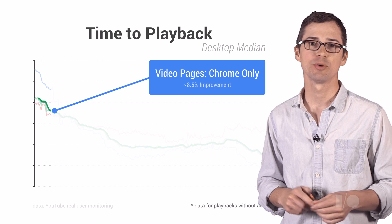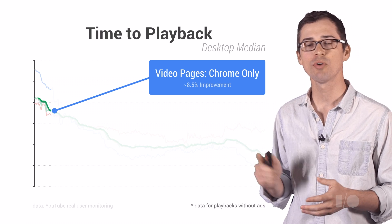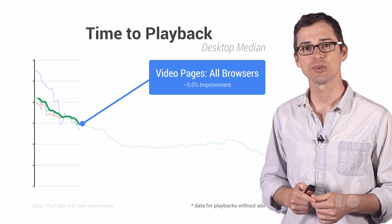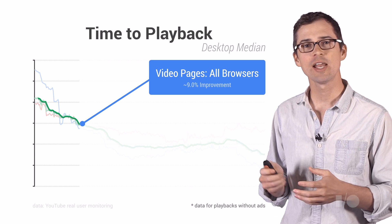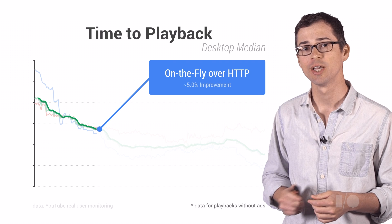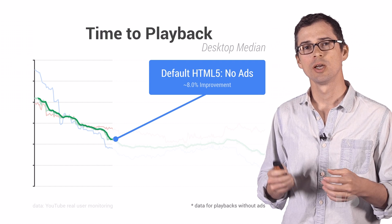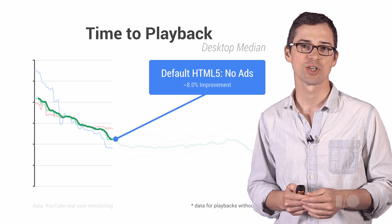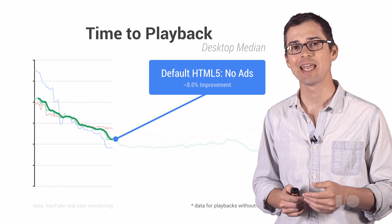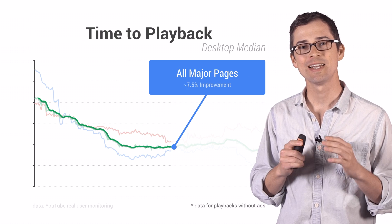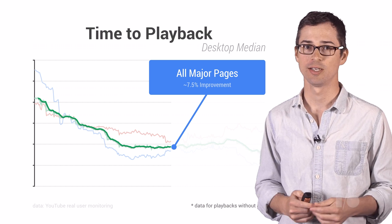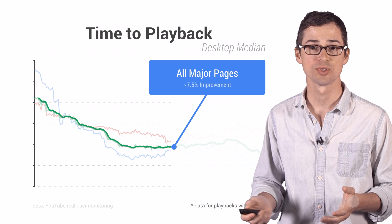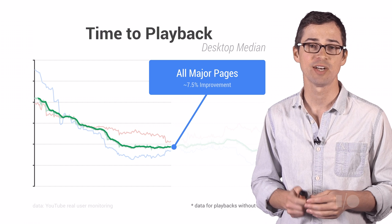When we added that persistent player between consecutive video pages in Chrome, we reduced the overall time until playback by 8.5%. Expanding to all supported browsers was another 9% improvement. Enabling on-the-fly processing over HTTP chunking yielded a 5% speedup. By defaulting supported browsers to our HTML5 player, we reduced our overall player initialization time and generated an 8% improvement. And then by dynamically navigating between all pages on the site — not just consecutive video pages — we were able to preemptively create a persistent player before it was even used, reducing our overall time until playback by 7.5%.